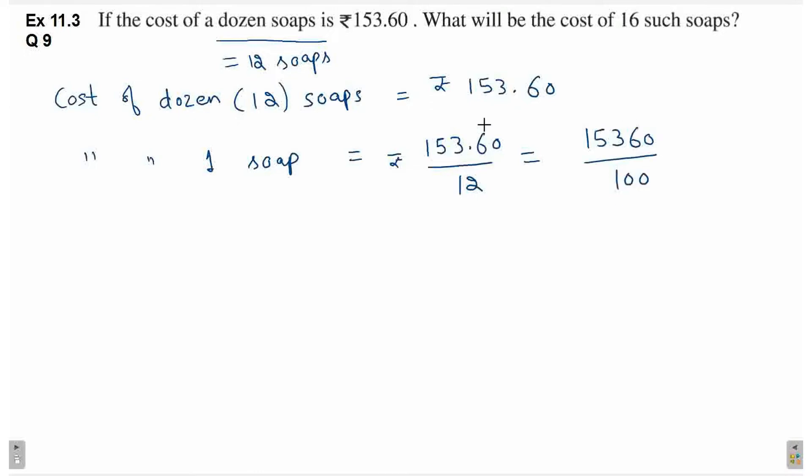Decimal ko remove kiya, denominator mein aaya one. Decimal ke pichhe jitnye digit hai, utnye lag gaya zero. Is case me decimal ke pichhe two digit hai. So hum divide karen ga is number ko by 100.